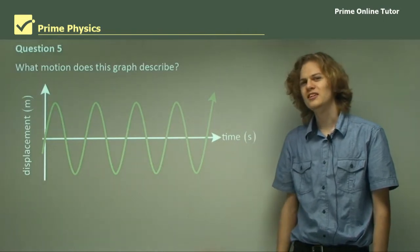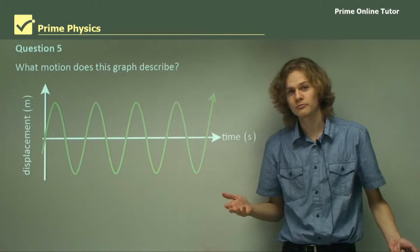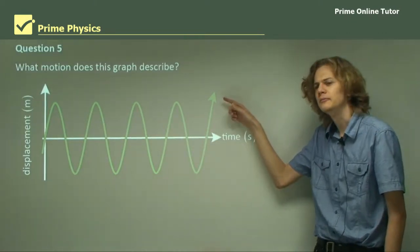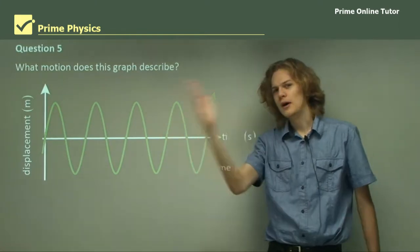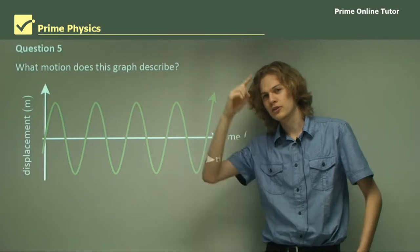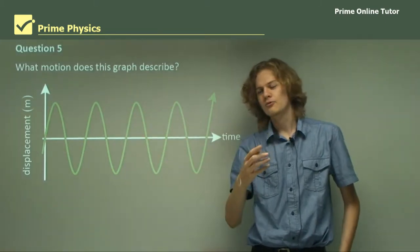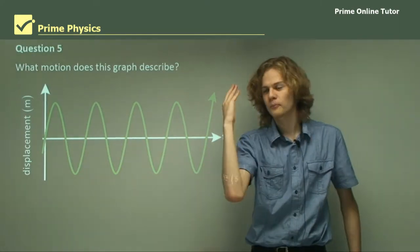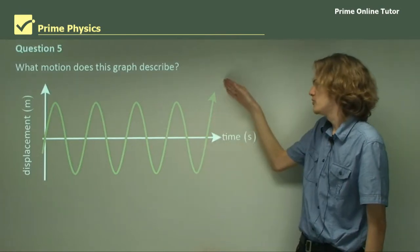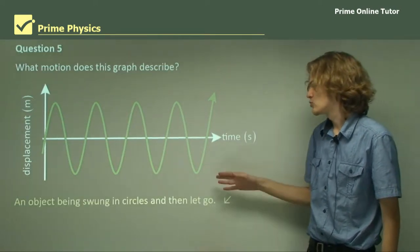Question 5. What motion does this graph describe? The x-axis is time and the y-axis is displacement. It looks like it's going back and forth very quickly, then shooting off in a straight line at the end. When something goes back, forth, back, forth — or up, down, up, down — it's as if the object is moving in a circle but we're only seeing one component of motion. If an object moves in a circle, its left-right component goes back and forth, just as seen in the graph. The straight line at the end means it stops moving in a circle and starts moving in a straight line. So this graph describes an object being swung in circles and then let go.